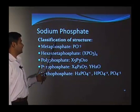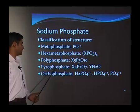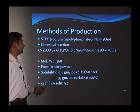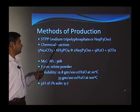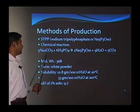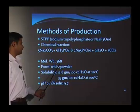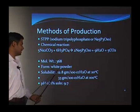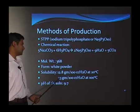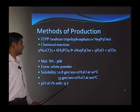For sodium phosphate, the classification by structure includes metaphosphate, hexametaphosphate, polyphosphate, pyrophosphate, and orthophosphate. In terms of method of production, we will see STPP, that is sodium tripolyphosphate, or Na5P3O10. Na2CO3 with phosphoric acid gives STPP. It has a molecular weight of 368, appears as a white powder, and has a solubility of 12.8 gram per 100 cc of water at 20 degrees Celsius, which increases to 33 gram at 100 degrees Celsius. The pH of a 1 percent STPP solution is 9.7.